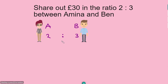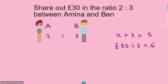The next step is to add up the two parts: 2 and 3. Adding them gives us 5 parts. These 5 parts must go exactly into 30 pounds, so we do 30 pounds divided by 5, which gives us 6.